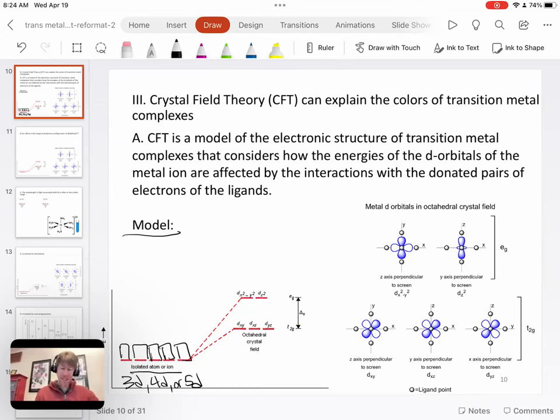And what we're saying under crystal field theory is that when the ligands and their pairs of electrons approach the metal ion, that there is going to be a splitting. So electron pairs from ligands make some of the d orbitals have higher energy than others.